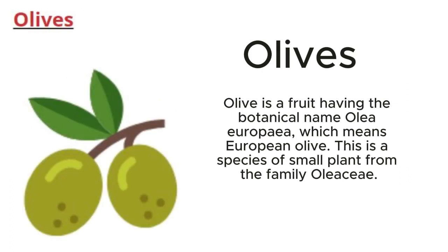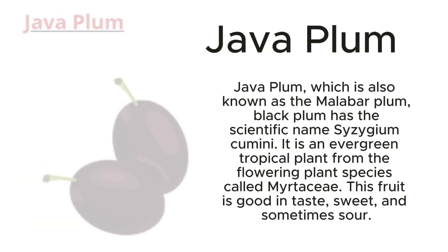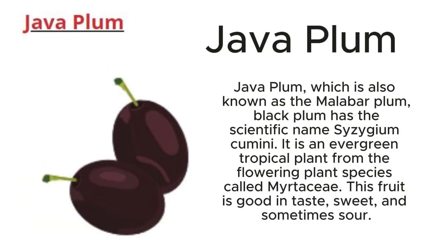Olives: Olive is a fruit having the botanical name Olea europaea, which means European olive. This is a species of small plant from the family Oleaceae. Java Plum: Java plum, which is also known as the Malabar plum or black plum, has the scientific name Syzygium cumini. It is an evergreen tropical plant from the flowering plant species called Myrtaceae.